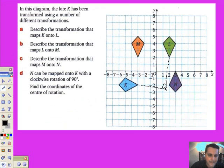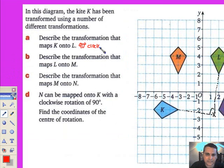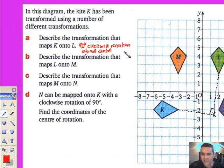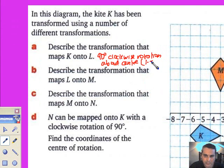Let's write it down: 90 degrees clockwise rotation, and it's about center (1.5, -2.5), or one and a half, minus two and a half.